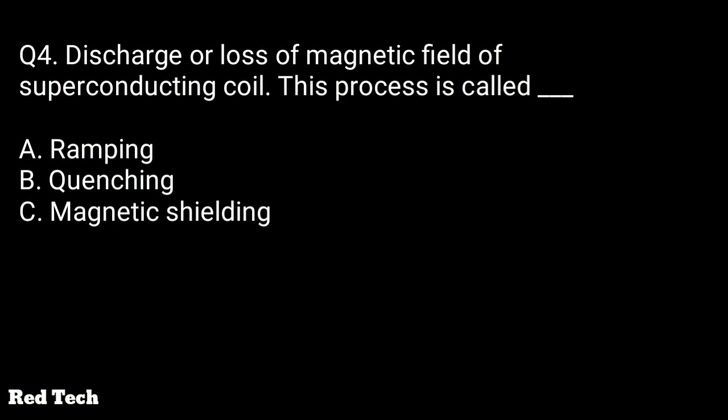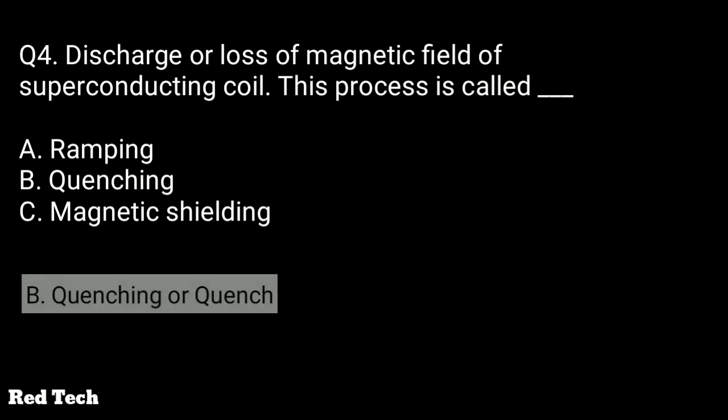Question number four: discharge or loss of magnetic field of a superconducting coil — this process is called? The options are ramping, quenching, or magnetic shielding. The right answer is quenching. This is basically the loss of magnetic field, which occurs when the resistance in the superconducting coil increases or when some emergency arises.